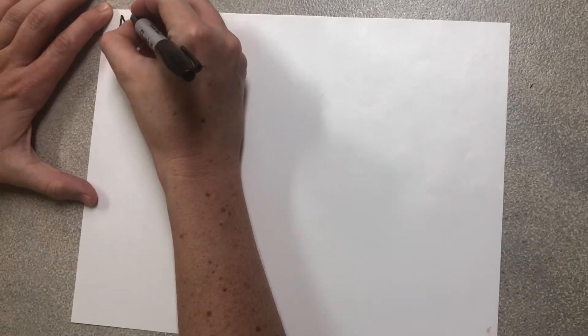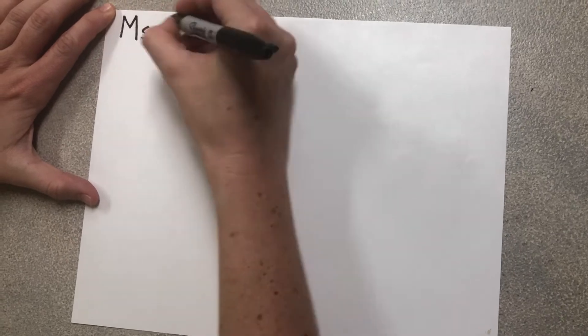Alright guys, we are going to draw a jack-o-lantern and the first thing we need to do is write our name. So I'm going to write my name, Miss Karen.